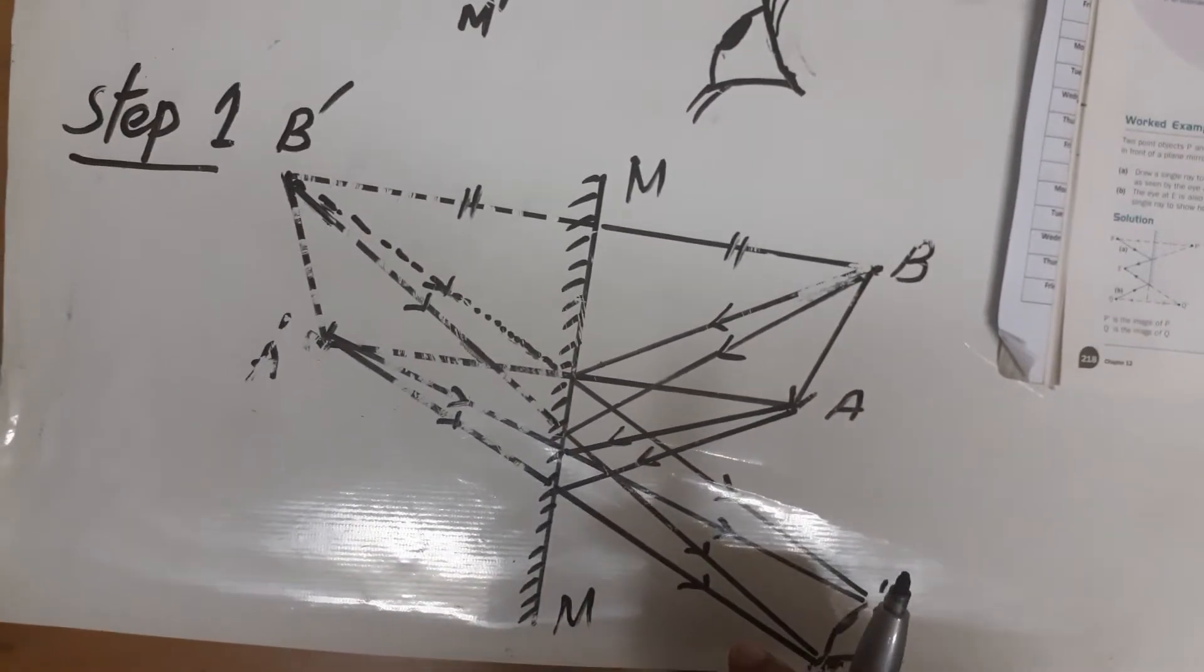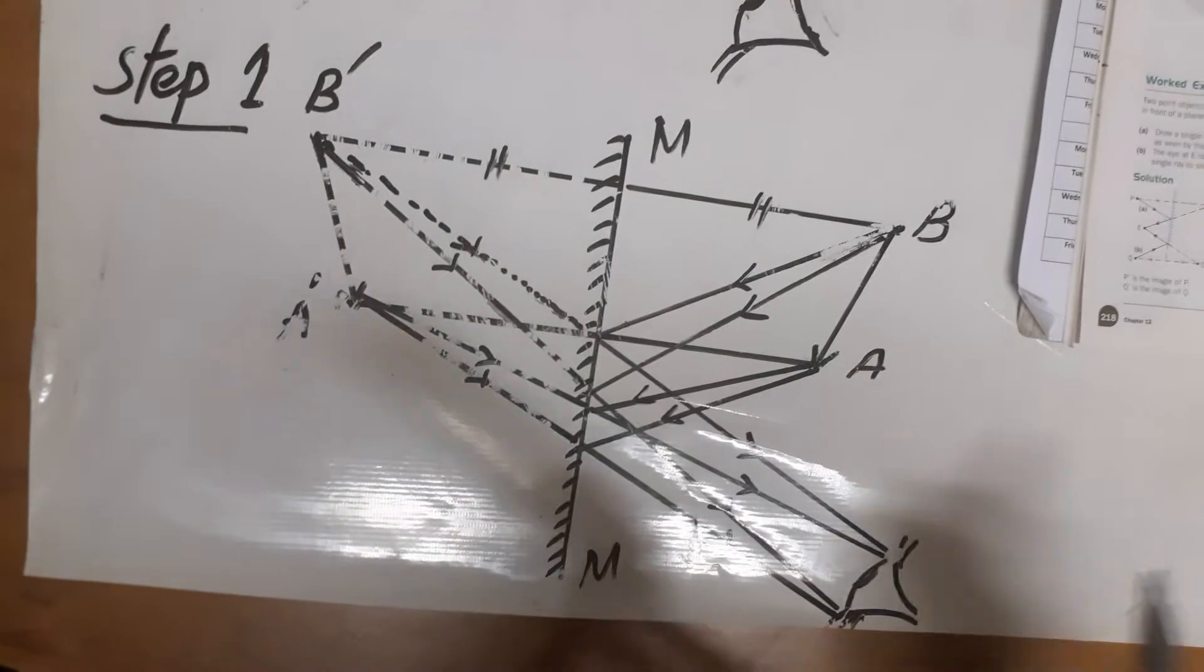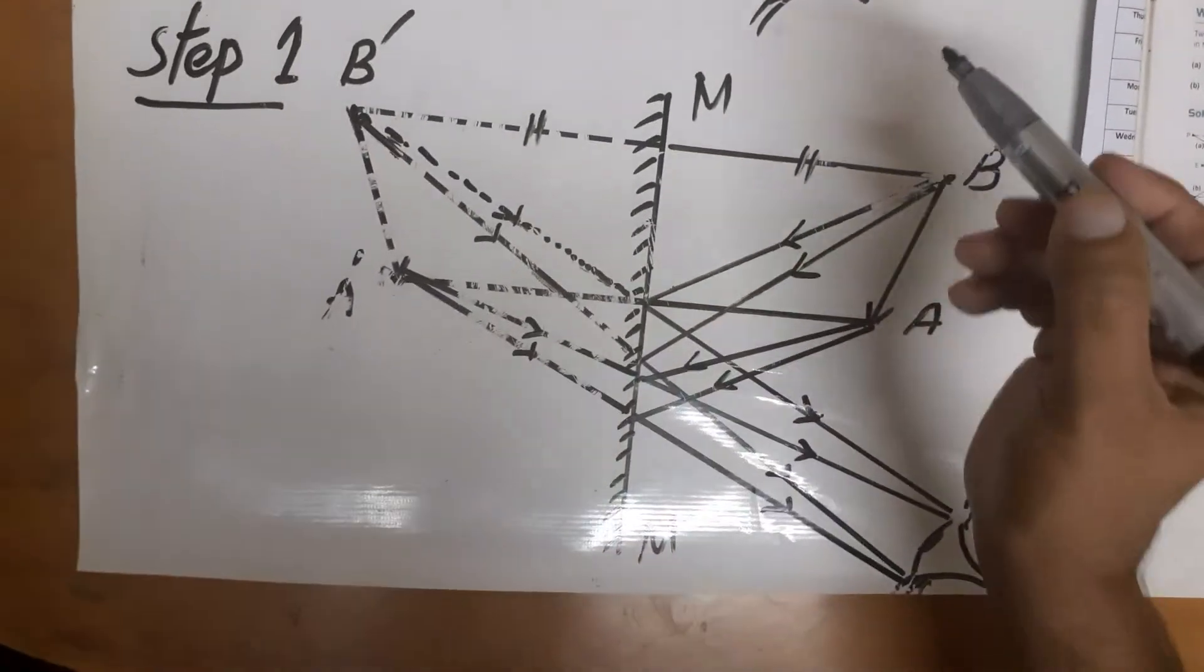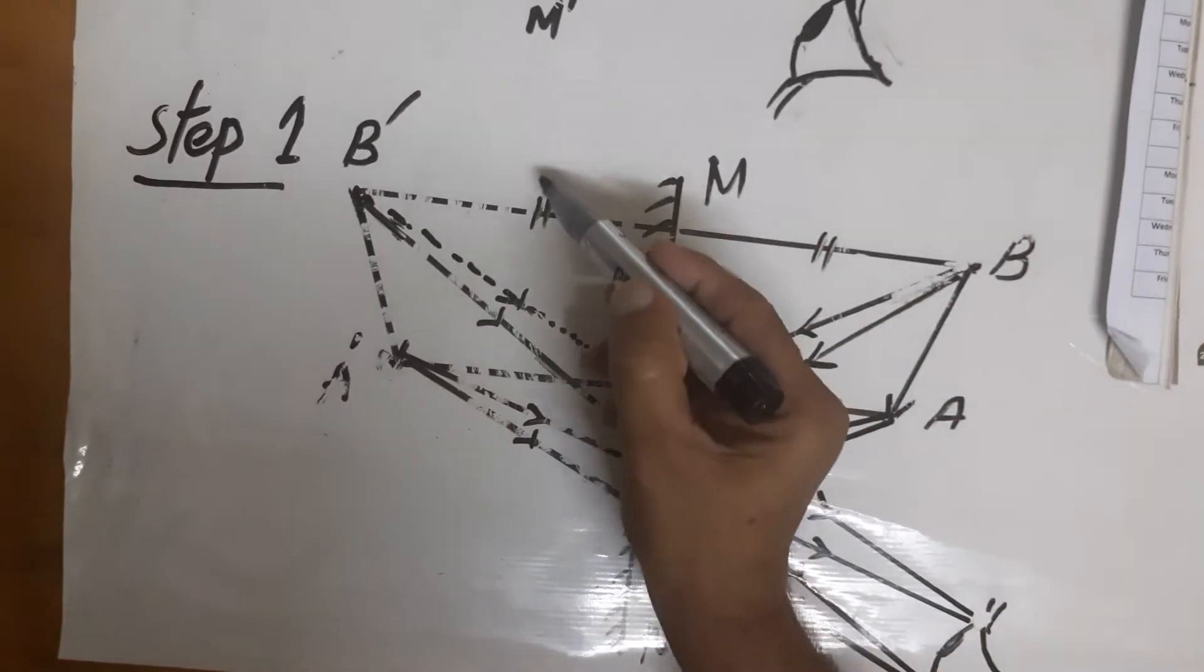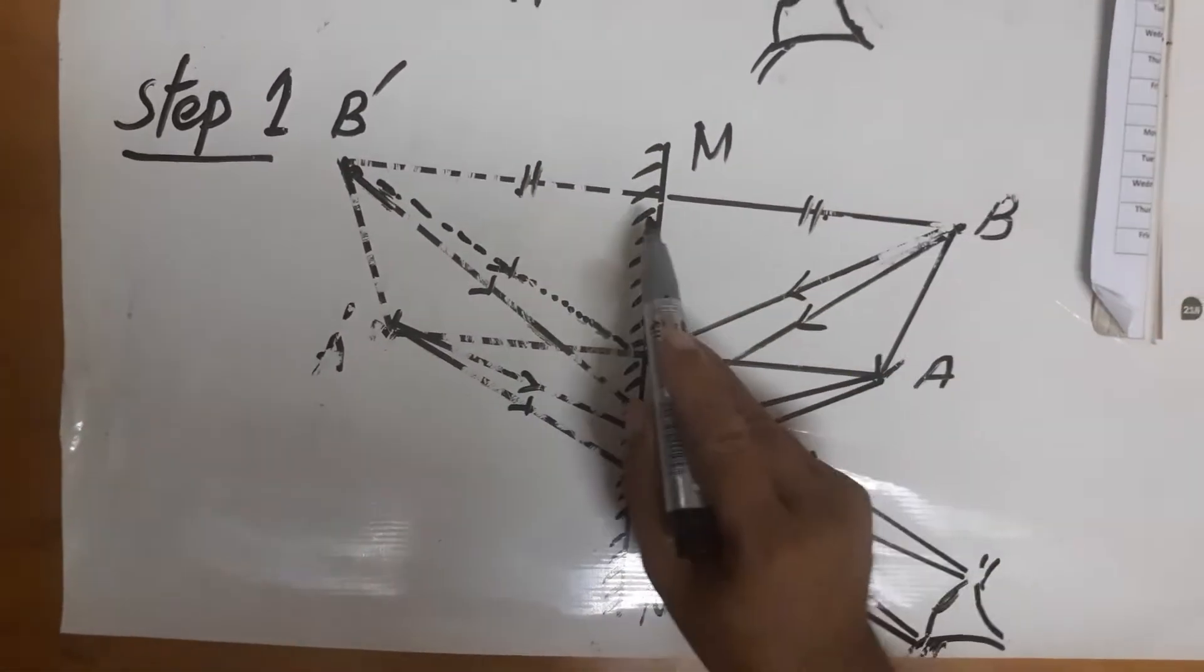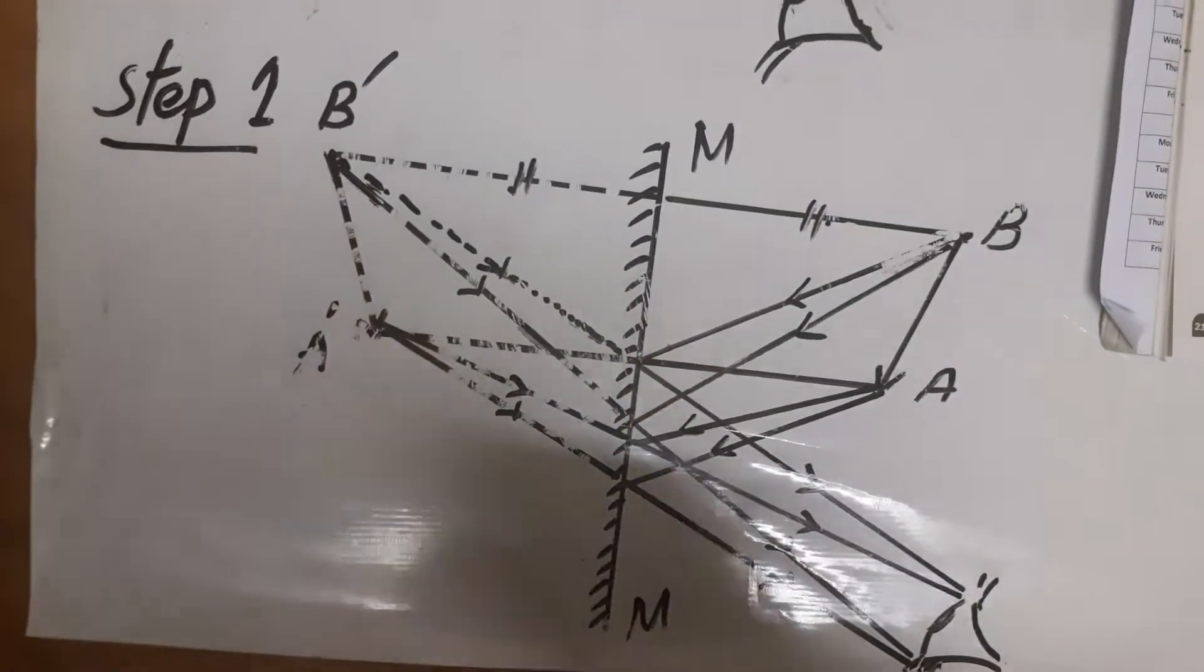Behind the mirror at the same distance as that of object in front of mirror. So we can say that this distance from the mirror to B and from the mirror to B dash is the same.